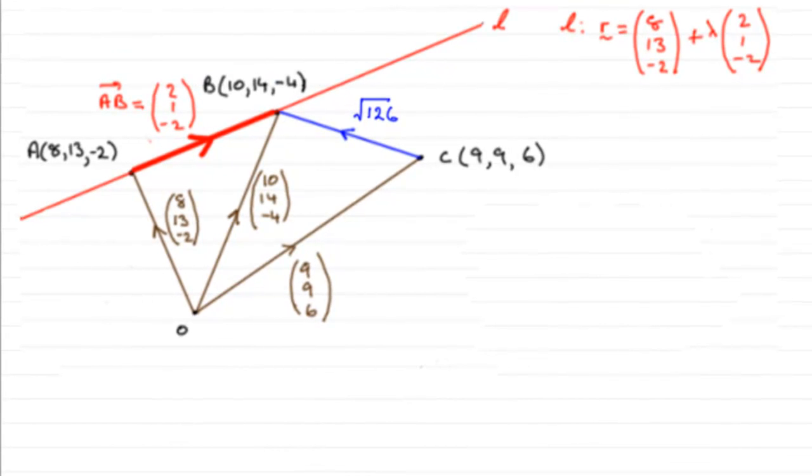Now for this next part, we've got to find the size of the acute angle between the line segment CB and the line L, giving your answer in degrees to one decimal place.